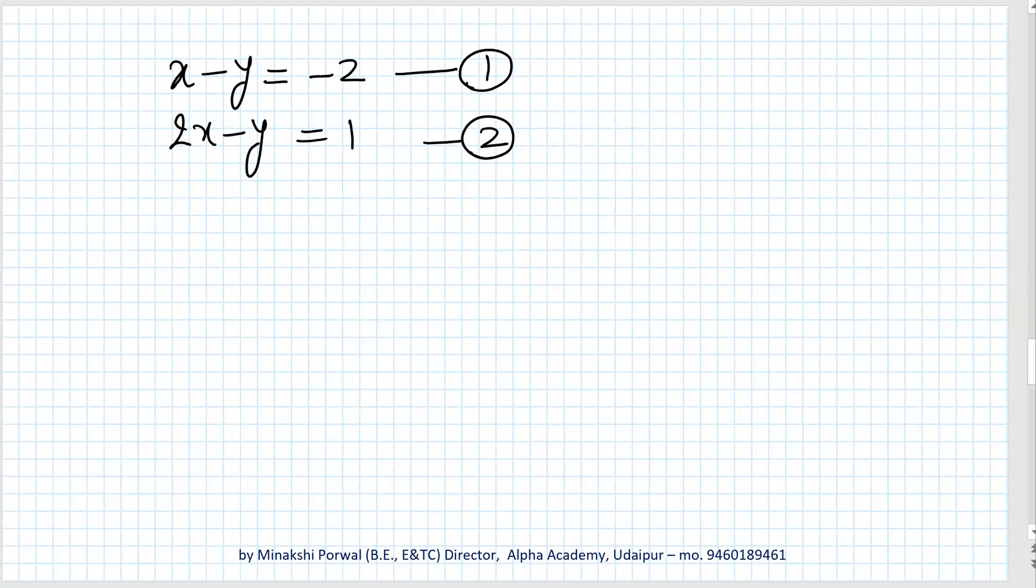We can solve by any method, but I'm using the elimination method. Both equations have -y, so we'll subtract equation 1 minus equation 2. This gives: x - 2x = -x, -y + y = 0, and -2 - 1 = -3. So -x = -3, which means x = 3.